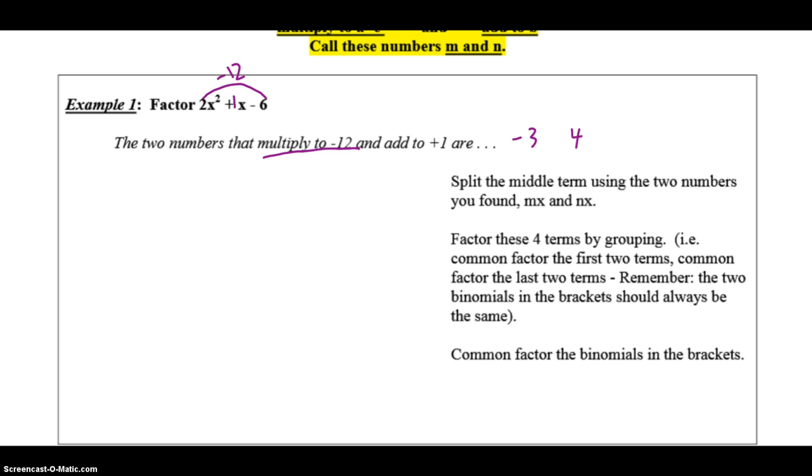So, to solve for this thing, what we're going to do is we're going to take this middle term and instead of writing it as 1x, we are going to split the middle term using those two numbers that we found. So, I'm going to get 2x squared minus 3x plus, and the other number was 4, 4x minus 6. So, really all we've done is we've taken that 1x and we've broken it up into two different terms, but if we were to collect those like terms again, we would end up with that 1x. So this equation, we haven't actually changed anything. It is still the same.